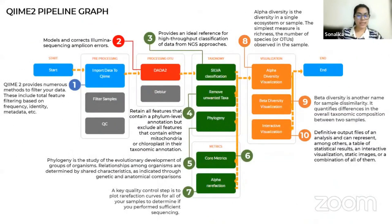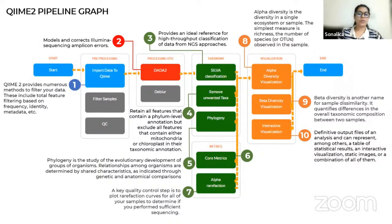The advances in the analysis of amplicon sequence datasets have introduced a methodological shift in how research teams investigate microbial biodiversity — away from sequence identity-based clustering producing operational taxonomic units, or OTUs, to denoising methods producing amplicon sequence variants.